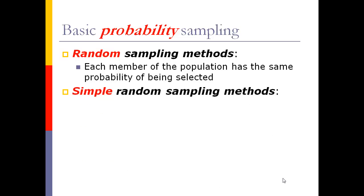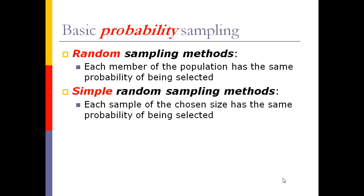There is a more specific method called simple random sampling. Not only does each member of the population have the same probability of being selected, but each sample of a certain size also has the same probability of being selected. This is a more stringent condition — not only do we select each person with equal probability, but also each combination of subjects with equal probability. This is the ideal in statistical analysis, but in practice you're never going to find it.